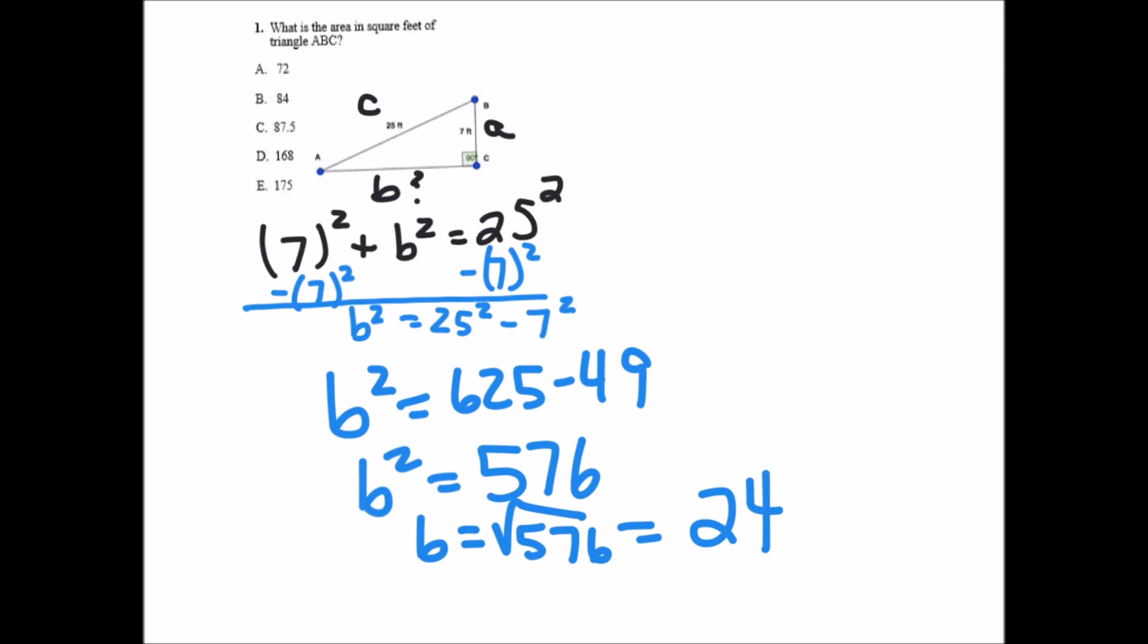Now you go back to find the area. It's 1 half the base times the height. In this case we see that the base of the triangle is 7 feet, and the height we just solved to be 24, so 1 half times 7 times 24.